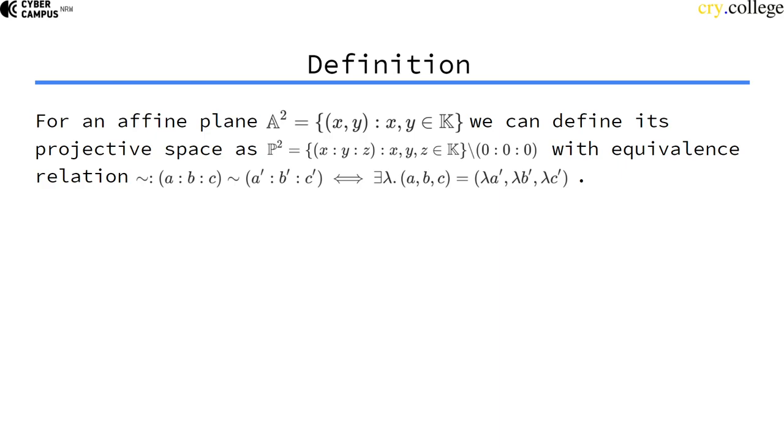So for an affine plane, we are on one plane, on one Ebene, and we have coordinates x and y in this plane. So now for this plane we can define a projective space, introducing the z coordinate with an equivalence relation.